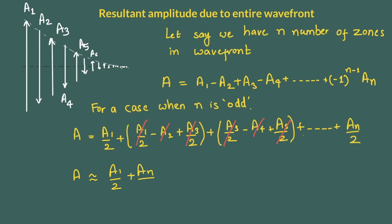Here it is important to note that if n is really very large its amplitude is going to be negligible. In that case it will simply be a1 by 2.